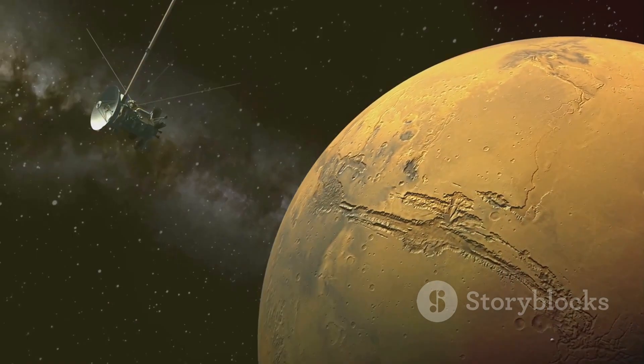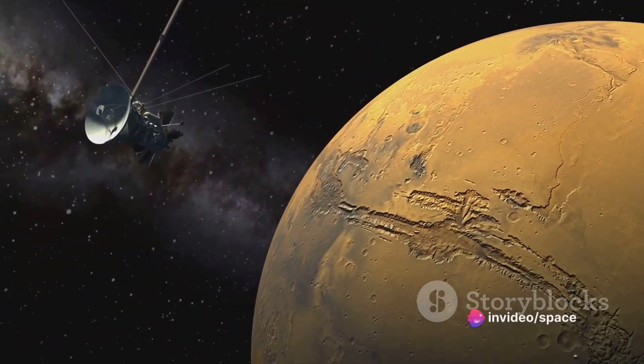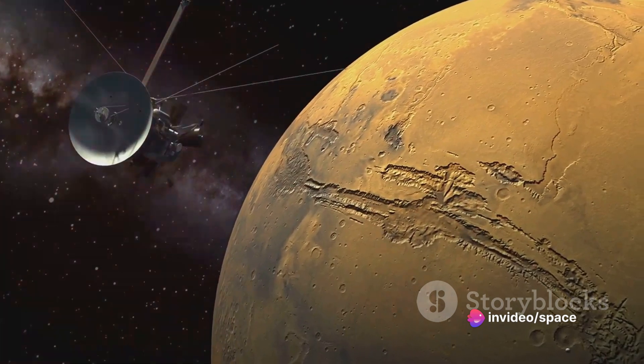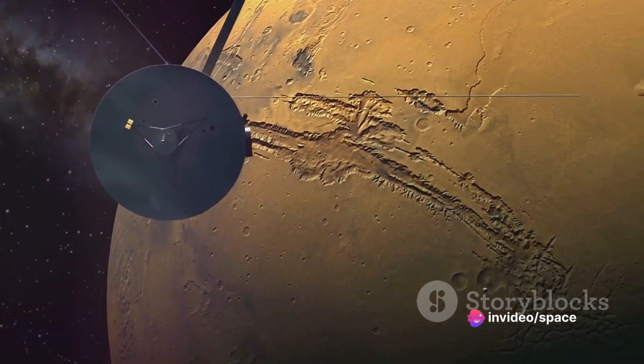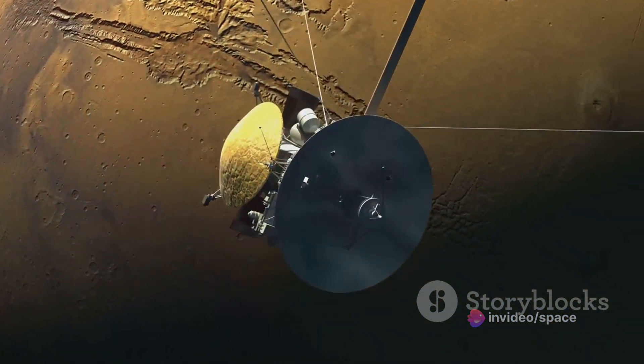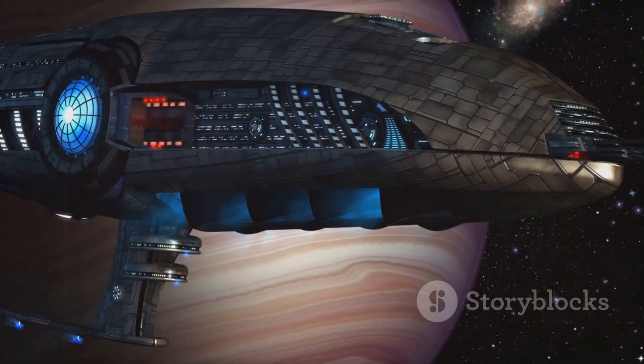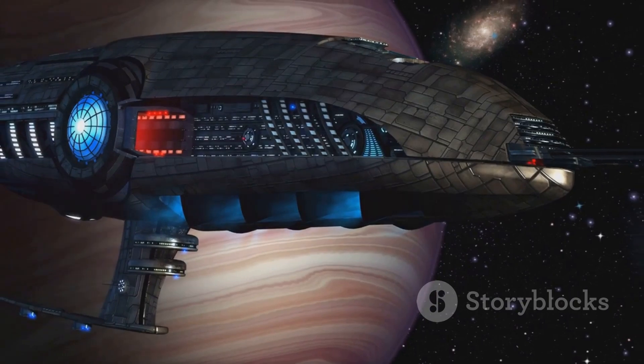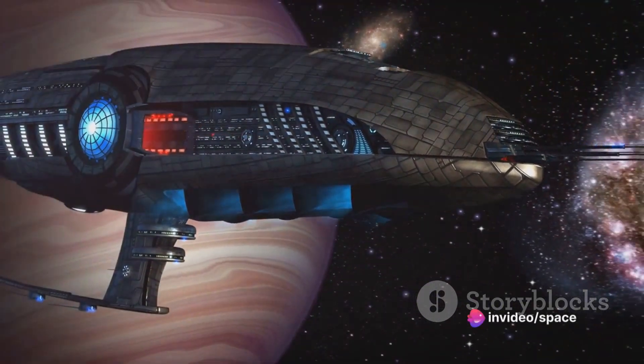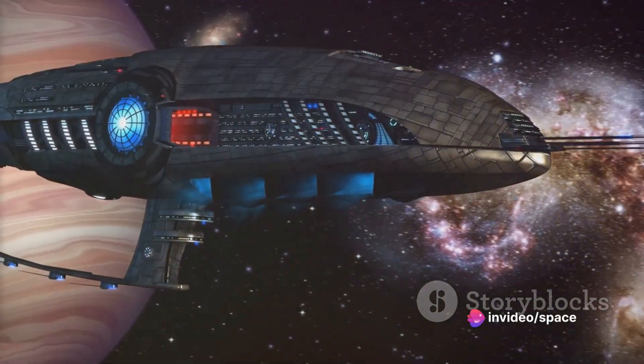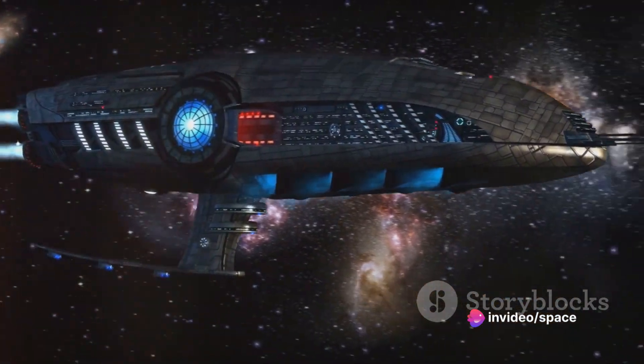Now let's take a step back. Where did the name Kepler-22b come from? It's named after the Kepler mission, a NASA initiative with a simple yet profound goal, to find Earth-like planets. This mission, launched in 2009, has been scanning the cosmos for signs of such planets, using the transit method to measure the dimming of stars as planets pass in front of them.